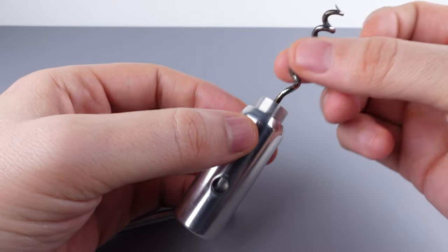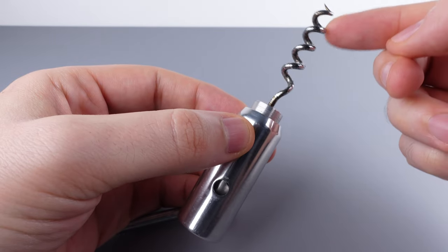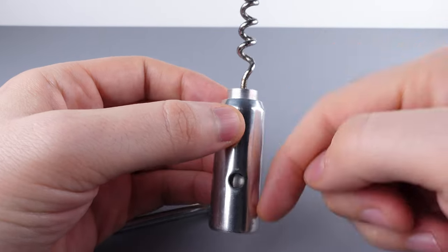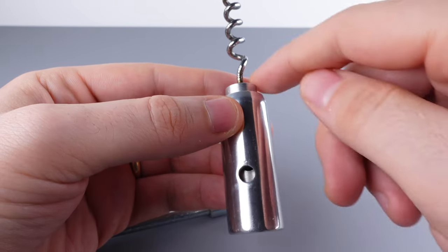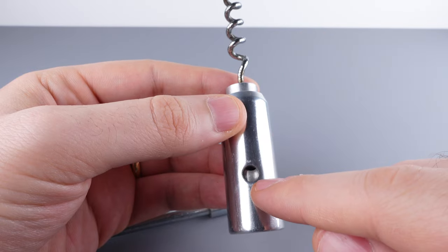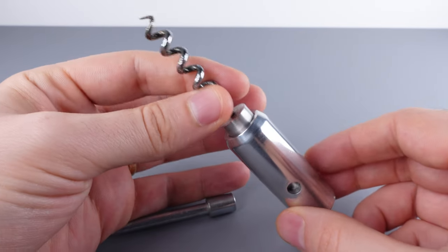What we need to do is get this piece, the corkscrew piece, to drop down a little bit. That will bring the hole down on this corkscrew piece and align it with the hole on the outer sleeve.